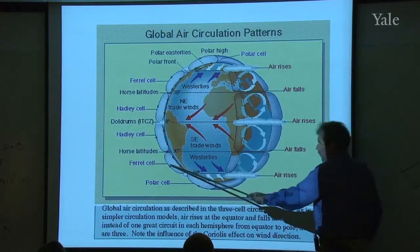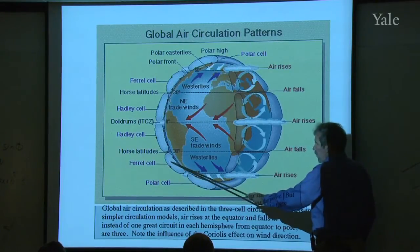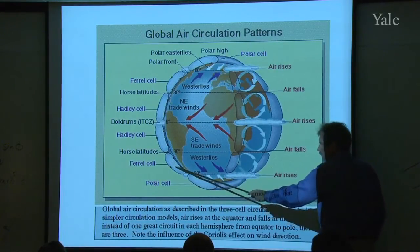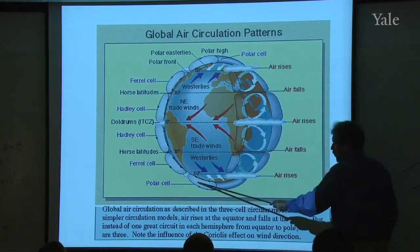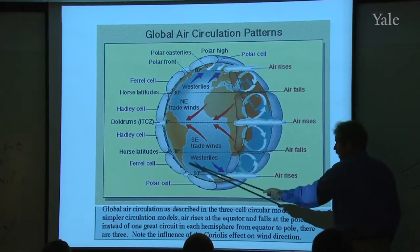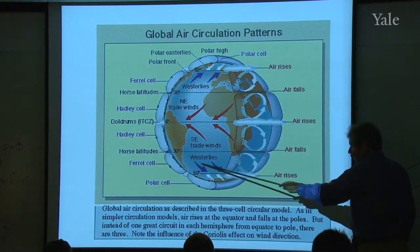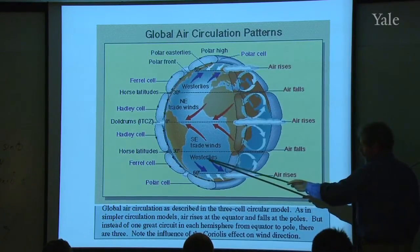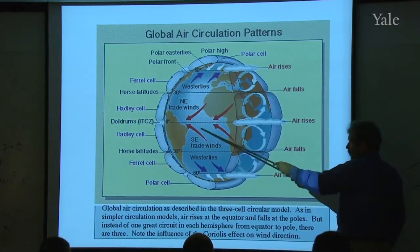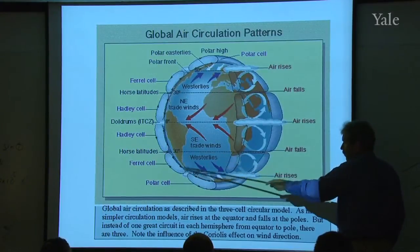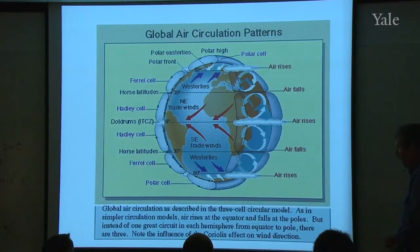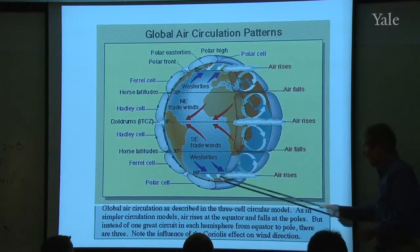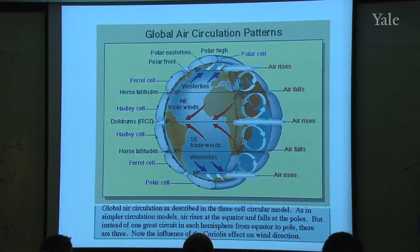The Ferrel cell is less easy to see in the data, and so is the polar cell. But what's easy to see are the westerlies. You have easterly flow near the surface here, westerlies here, and we'll talk about that, as well as this being the belt of storms, which I'll define in just a moment.